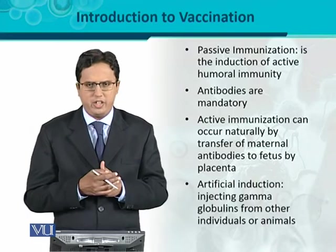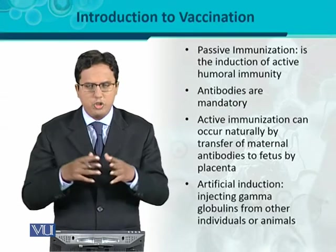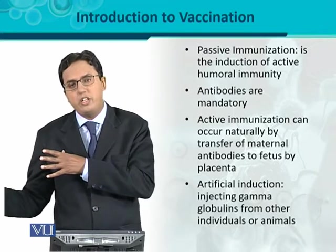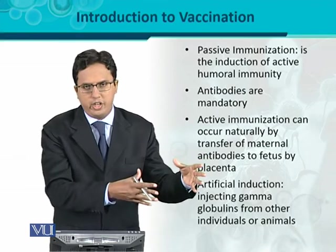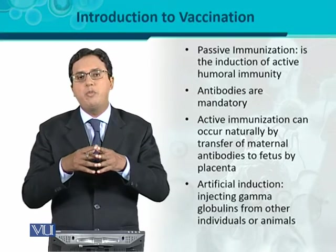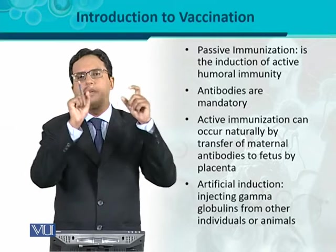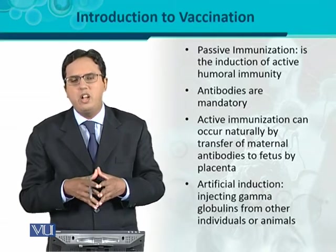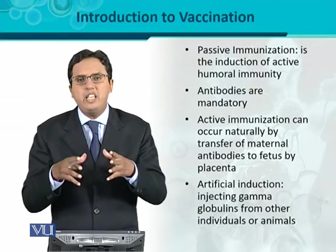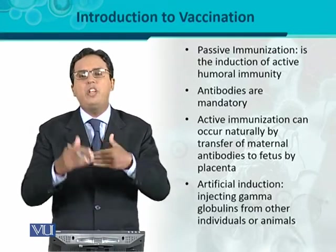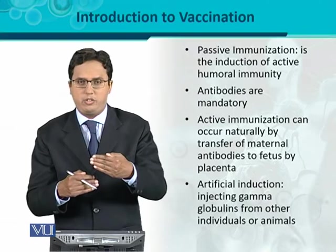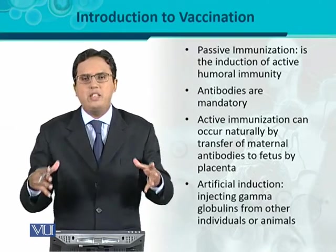On the other hand, passive immunization can be achieved artificially by injecting gamma globulins, which are immunoglobulins or antibodies from other individuals who are already exposed to those antigens. Antibodies can also be taken from animals that have been immunized against that antigen, and if injected into other individuals, that is called artificial passive immunization. Passive means the antigen or pathogen is not introduced directly, but instead the antibodies produced in response are introduced into the body, and those antibodies will protect against such potential pathogens. That is the difference between active and passive immunization.